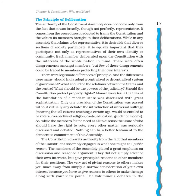Only one provision of the constitution was passed without virtually any debate: the introduction of universal suffrage, which means that all citizens reaching a certain age would be entitled to be voters irrespective of religion, caste, education, gender, or income. While the members felt no need at all to discuss the issue of who should have the right to vote, every other matter was seriously discussed and debated. Nothing can be a better testament to the democratic commitment of this assembly.